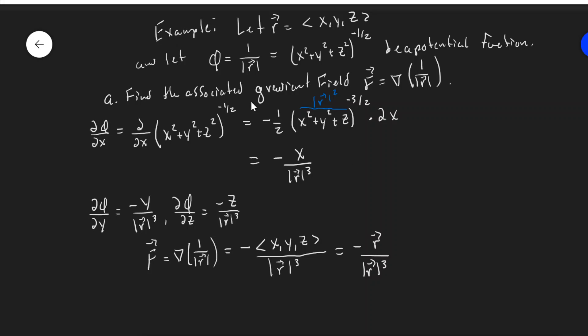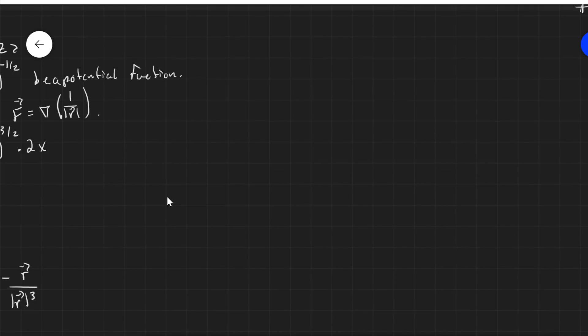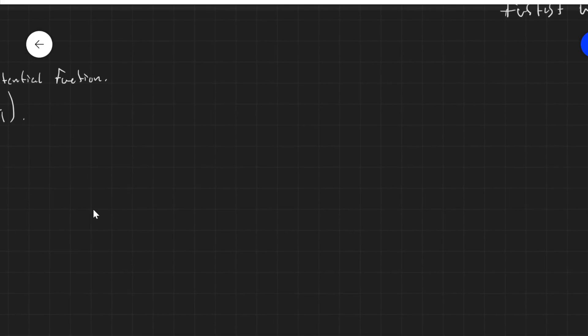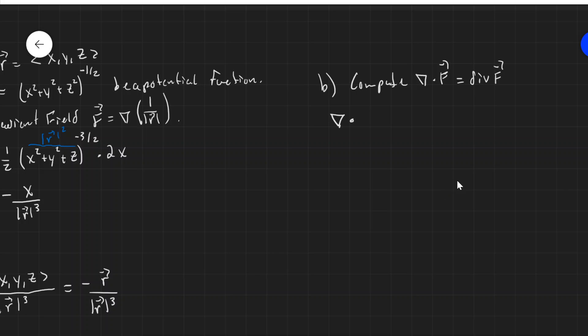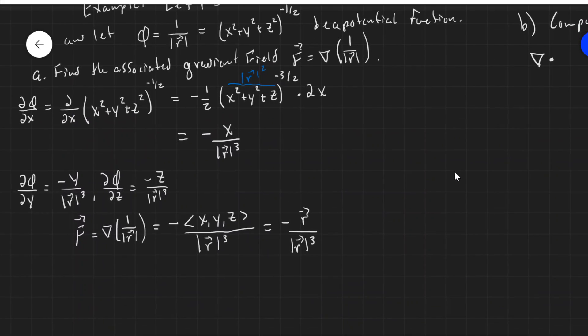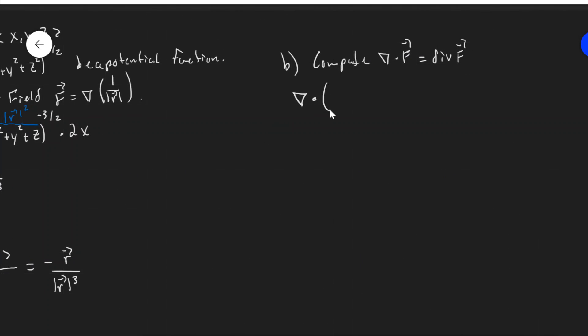So there's our vector field f, and now we're going to compute next step is to compute the del dot f. So now compute part b, compute del dot f, which is, of course, the divergence of f. So that's del dot minus R over magnitude R cubed.